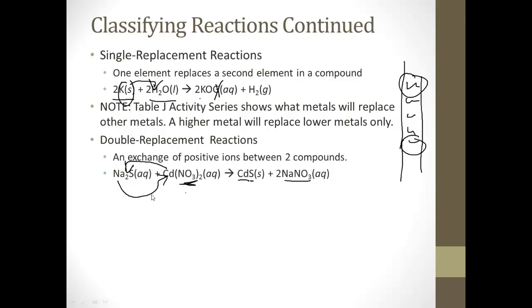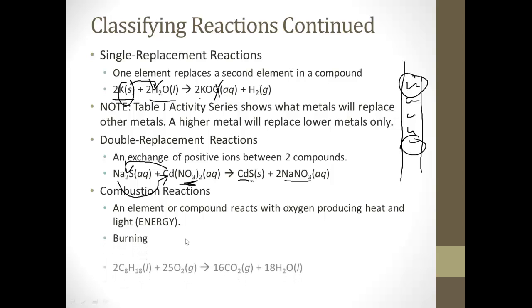The final kind is a combustion reaction. Combustion is exactly what you think, it's burning. The book definition is an element or compound reacts with oxygen producing heat and light. It produces energy. Here's an example: C8H18, a carbohydrate, reacting with oxygen because oxygen is needed to burn, makes carbon dioxide and water. The products of combustion are always carbon dioxide and water.